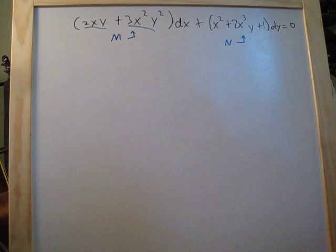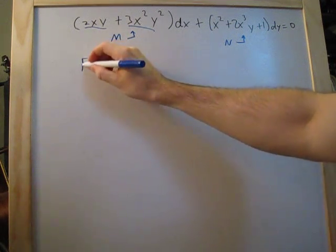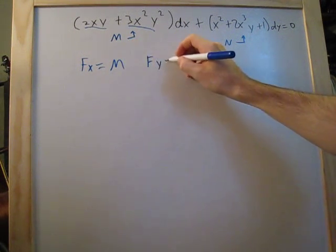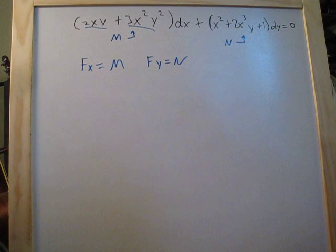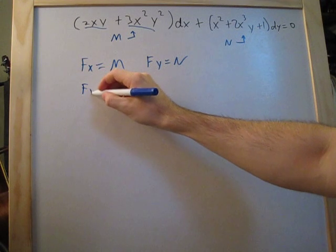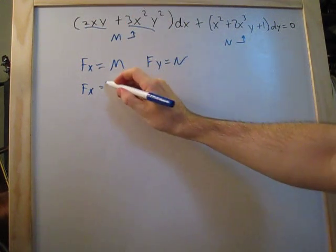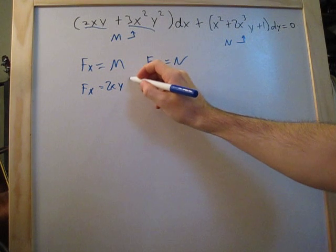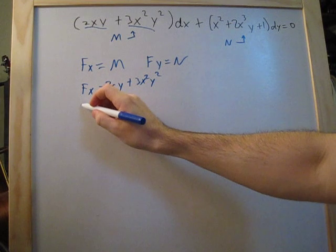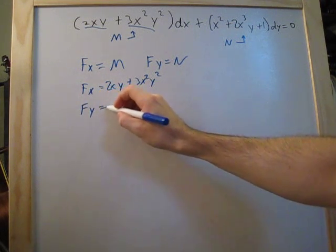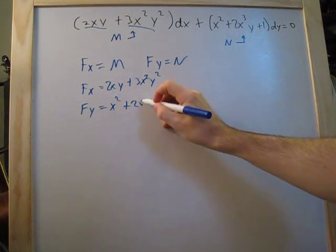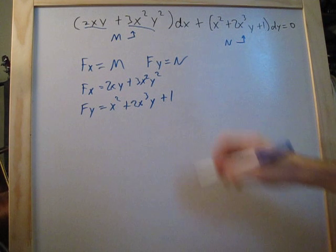The next step: we say f_x equals M and f_y equals N. So f_x equals 2xy plus 3x²y², and f_y equals x² plus 2x³y plus 1.